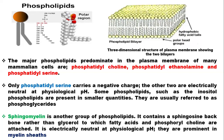Phospholipids are lipids containing, in addition to fatty acid and alcohol, a phosphoric acid residue. They sometimes have a nitrogenous base in them. For instance, in glycerophospholipids, the alcohol is glycerol, but in sphingophospholipids, the alcohol is sphingosine. The long chain is the fatty acid group. So the polar group region is hydrophilic and the fatty acid tail region is hydrophobic.